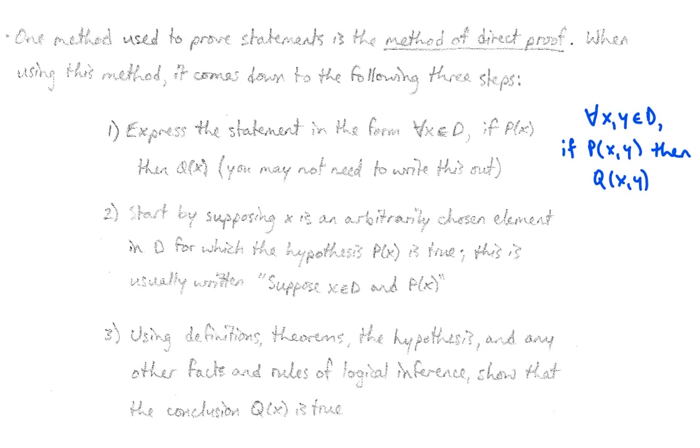First thing you're going to do, and this is sort of an optional step, is to express the statement in the form for all x in D, if P(x) then Q(x). So you may want to, for yourself, actually take the sentence that's given to you in the problem and underline pieces of it and say, okay, this is for all, this is the P(x)...